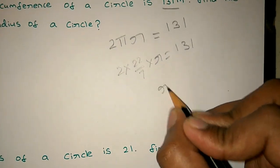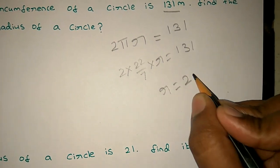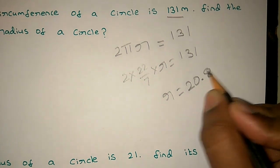22 by 7 into R equals 131. If we solve this, we will get R equals 20.85.